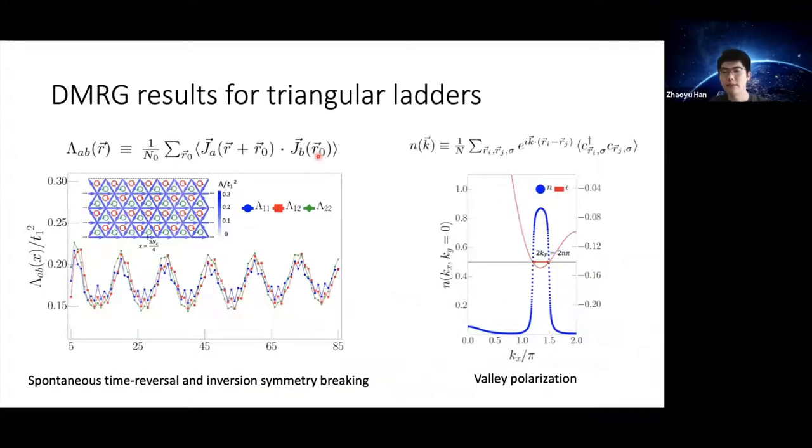We can study the structure factor of the pair-pair correlator in momentum space and extract the decay exponent and the PDW wave vector for different density in the two-leg case. Because in one dimension, the static susceptibility behaves as T to the nu minus two, an exponent smaller than two implies a divergent pair density wave susceptibility at zero temperature. We can see that in a wide range of density in the two-leg case, and for fixed density for two, four, and six-leg cases, nu is certainly smaller than two. So the susceptibility is divergent at zero temperature. Moreover, the wave vector Q depends smoothly on the density, which indicates that this is an incommensurate pair density wave.